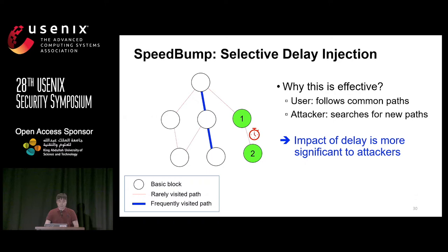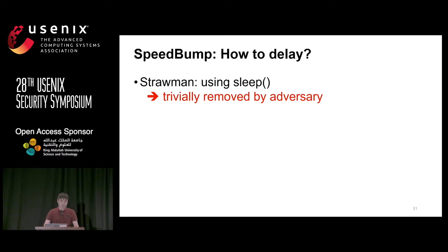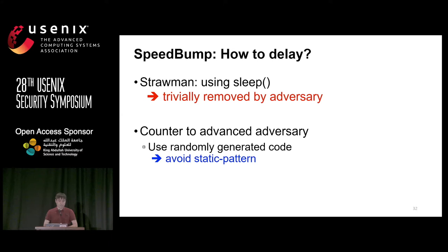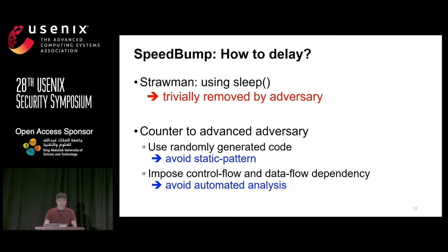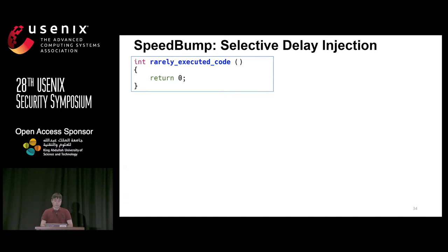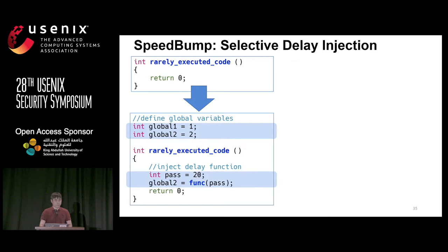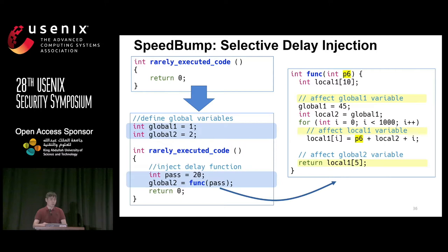Now you know where to inject the delay. The next question is how to inject it. The simple solution is to use a sleep function, but this is very easy to nullify and obvious to the adversary. Instead, we use randomly generated code to avoid static pattern matching analysis. We also impose control flow and data flow dependencies to avoid automated analysis. For example, we define a global variable and create a function consisting of randomly generated code that modifies the global variable and modifies a local variable using the passed argument value — this is how the delay works.